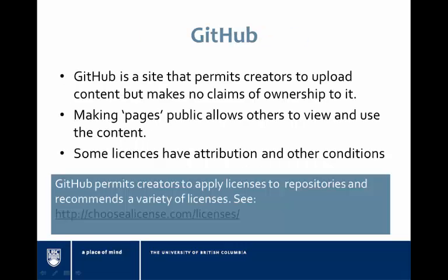GitHub is a site that permits coders to upload shareable code into repositories, and permits others to access, adapt, and otherwise use the content. Repository content can be loaded without the application of license requirements, but offers the option to apply licenses to the content. Like all other licensed content, these software licenses require that conditions be met by downstream users.